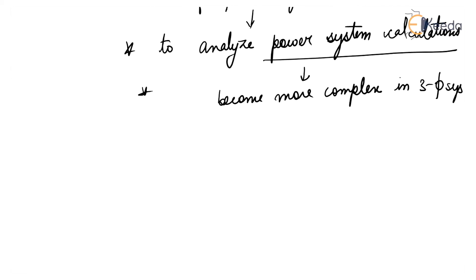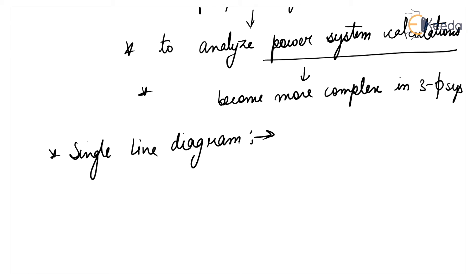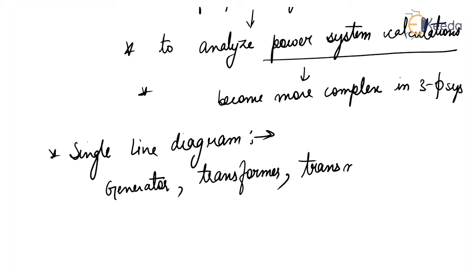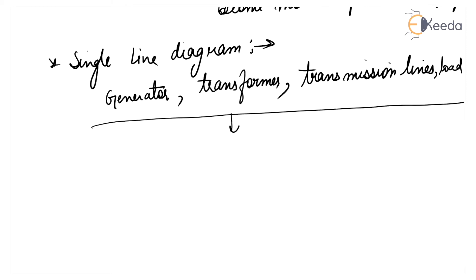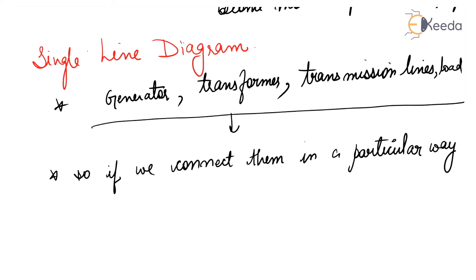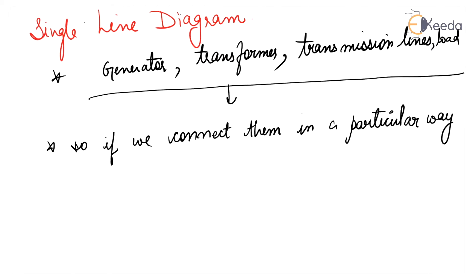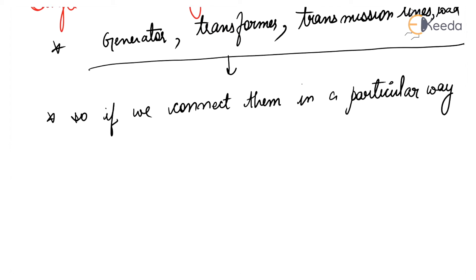You already know what a single line diagram or one line diagram is. In a power system, there are many components: generator, transformer, transmission lines, and different loads. If we connect them in a particular way, the single line diagram is nothing but a representation of the combination of various components using their standard symbols. Now we will convert this system into the absolute system and the per unit system.